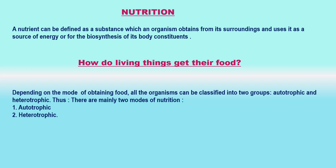Nutrition. A nutrient is an organic or inorganic substance required for the maintenance of life and survival of a living organism. In most simple terms, a nutrient can be said to be a particular type of food. A nutrient can be defined as a substance which an organism obtains from its surroundings and uses as a source of energy or for the biosynthesis of its body constituents.